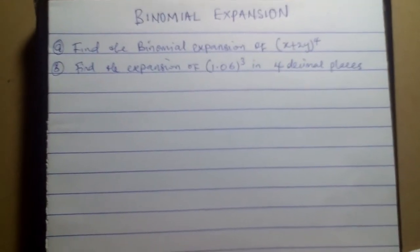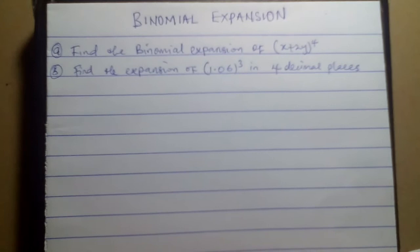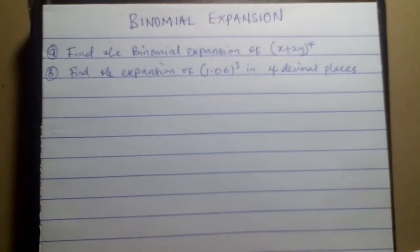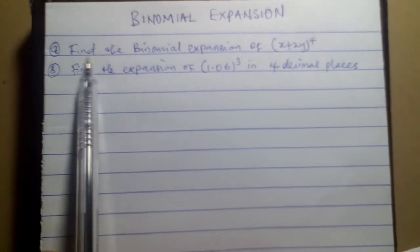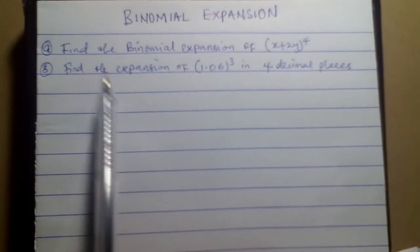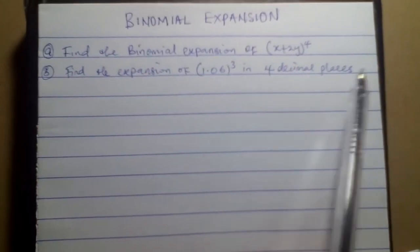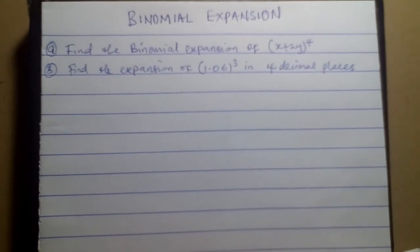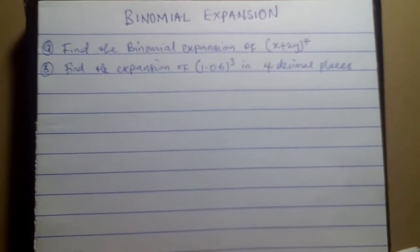Welcome to Global Tutors YouTube channel. In this video we are going to be looking at binomial expansion. The first question says find the binomial expansion of x plus 2y raised to the 4th power. The second question says find the expansion of 1.06 raised to the power 3 in 4 decimal places. Now the question remains: how do we solve binomial expansion?